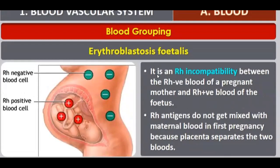Erythroblastosis fetalis — what does this mean? It is an RH incompatibility between the RH negative blood of a pregnant mother and RH positive blood of the fetus. If an RH positive person and an RH negative woman are married, the child will be positive because the positive factor dominates. If the father is negative and the mother is positive, there is no problem. But if the mother is negative and the child is positive, there can be a problem.